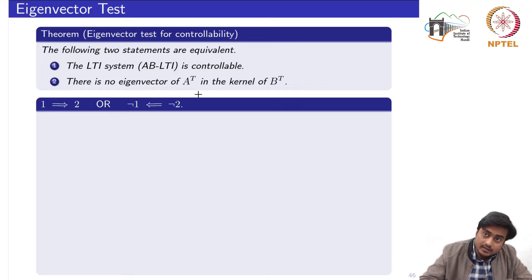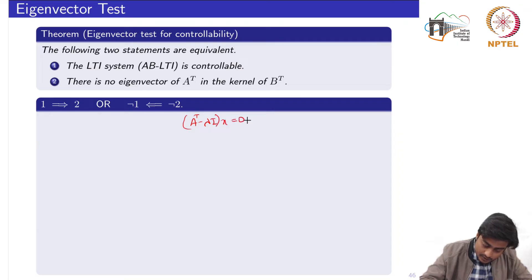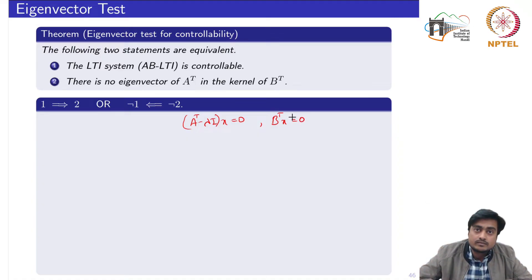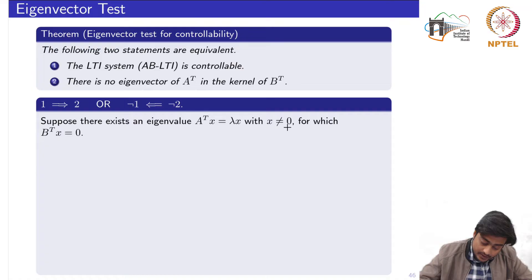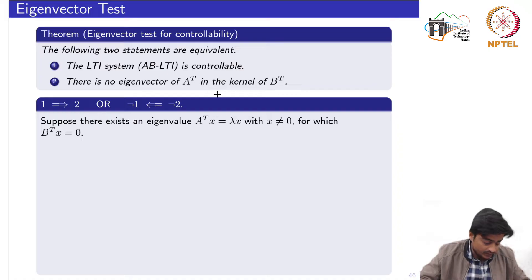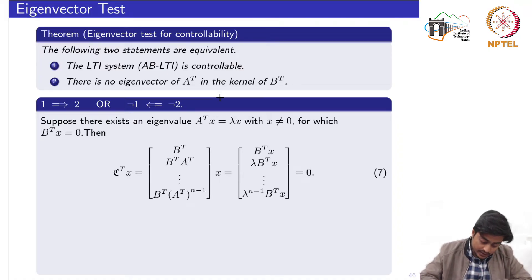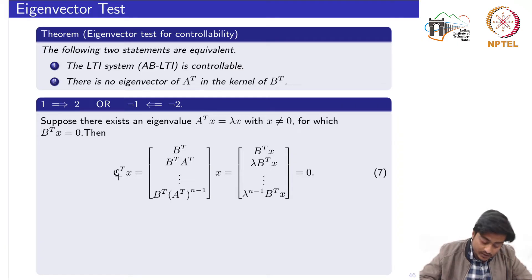Saying that there is an eigenvector of A-transpose in the kernel of B-transpose means both equations are satisfied: (A-transpose minus lambda I) x equals 0, and B-transpose x equals 0. So suppose there exists an eigenvalue lambda with a non-zero eigenvector x for which B-transpose x equals 0. Now let us write the multiplication of the transpose of the controllability matrix times x.